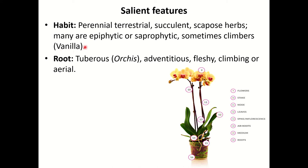This diagram will give you an idea about the different parts of the orchid plant. If you note the numbers here and their corresponding labels, you will be able to form an idea as to how these plants look like.